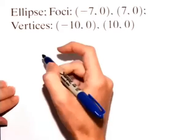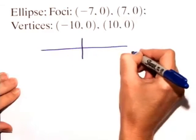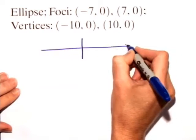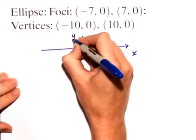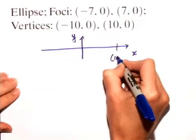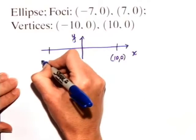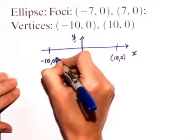We can see that along the x-axis, we have a vertex located at (10, 0), and we also have one located at (-10, 0).